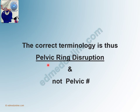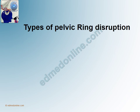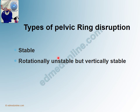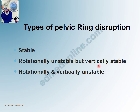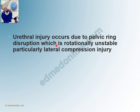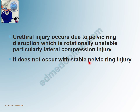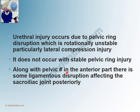Hence the correct terminology is 'pelvic ring disruption' and not 'pelvic fracture.' A posterior urethral injury is classically called a posterior urethral distraction injury and is on account of a pelvic ring disruption. The types include: stable, rotationally unstable but vertically stable, or rotationally and vertically unstable. Urethral injury occurs when there is rotationally unstable pelvic ring disruption, particularly associated with lateral compression injury, and not with a stable pelvic ring injury. There is also associated disruption of the ligaments affecting the sacroiliac joint posteriorly.